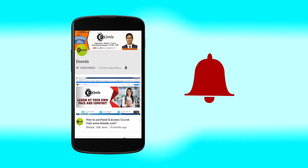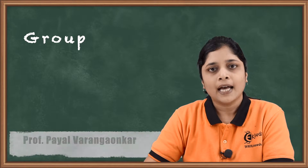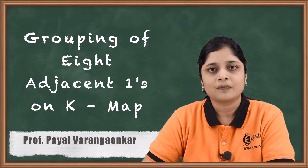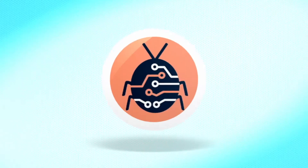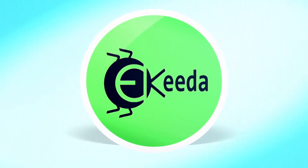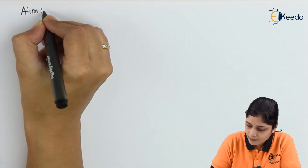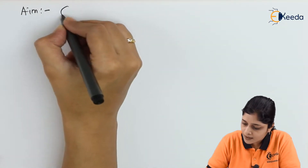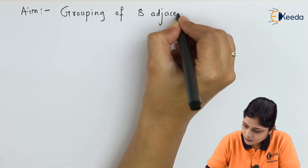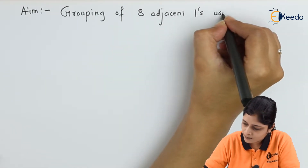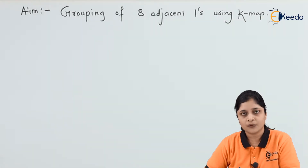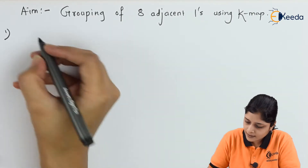Hello friends, we will consider the grouping of eight adjacent ones using K-map. Let's start with the example. Your aim is grouping of eight adjacent ones using K-map — how you will make a group of eight ones. Let's take the first example.